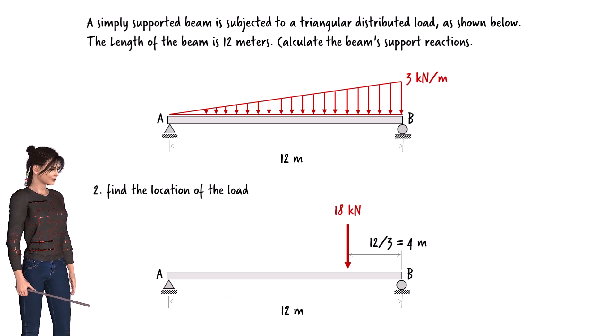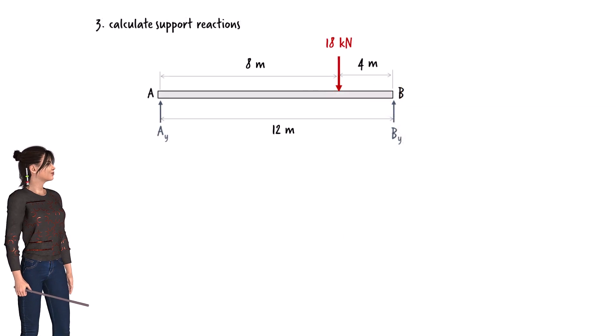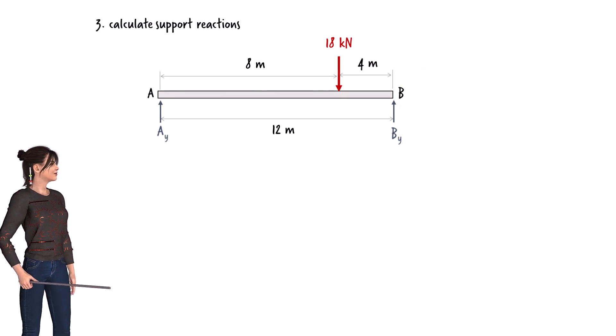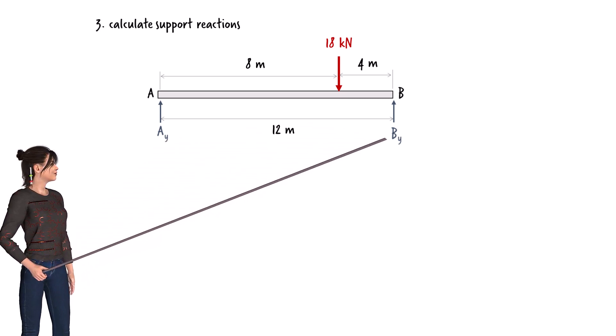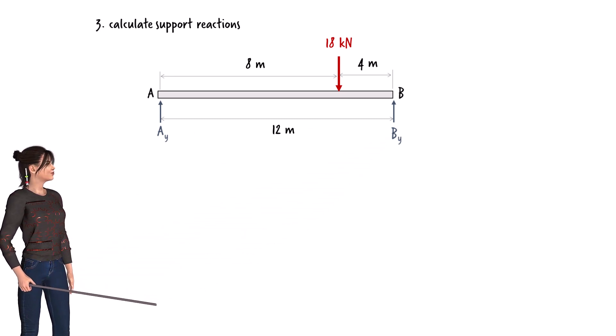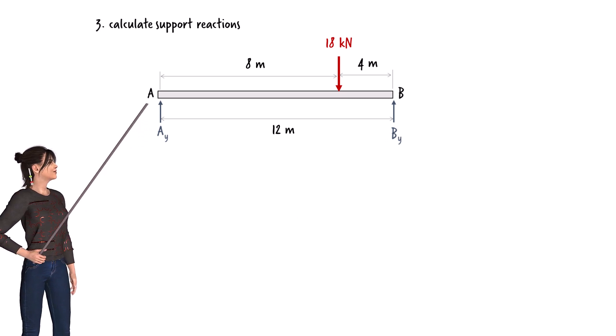Step 3: Calculate the support reactions. Here is the free body diagram of the beam. We'll use the following symbols for the support reactions: Ay for the vertical reaction at the left end, By for the vertical reaction at the right end. Since the beam is not subjected to a horizontal load, the horizontal reaction force at the pin support is zero.